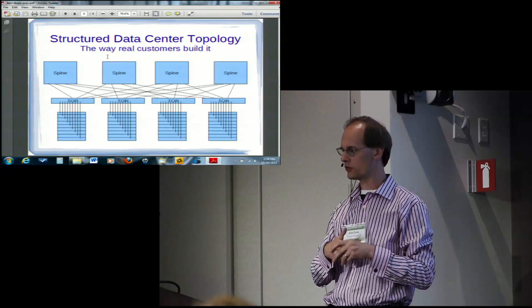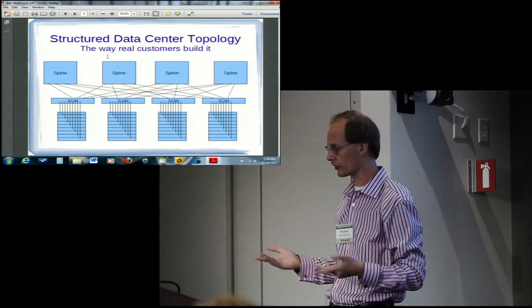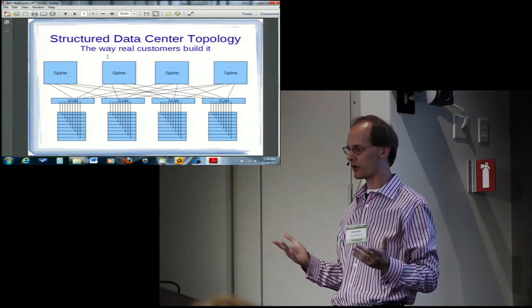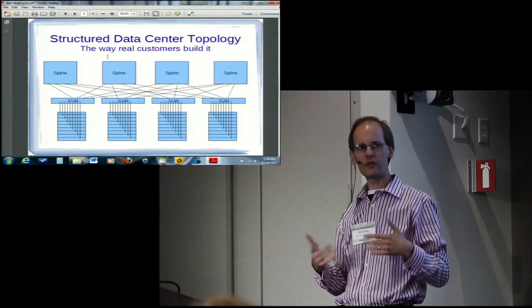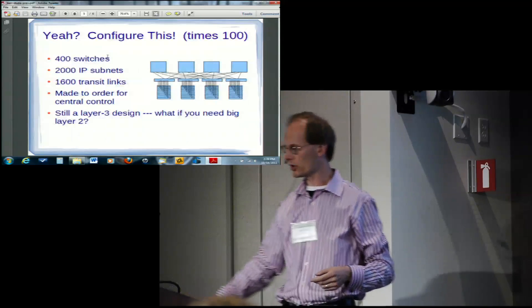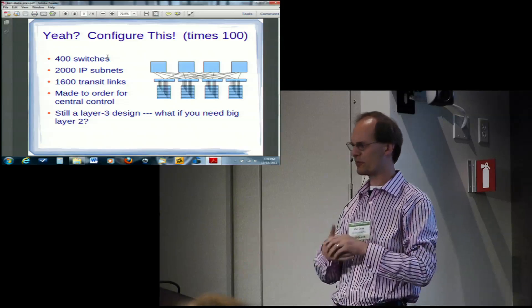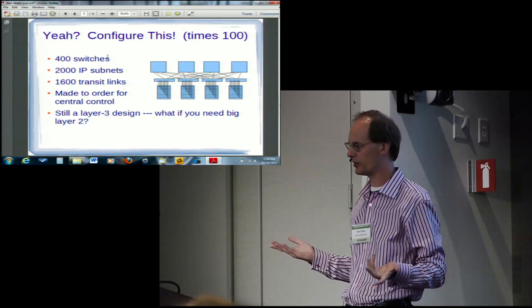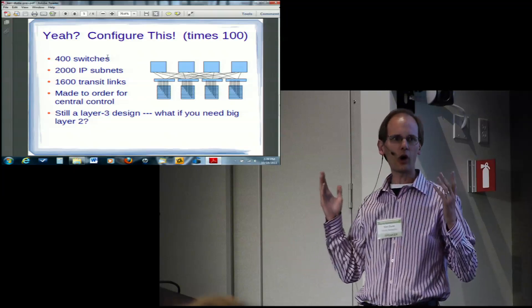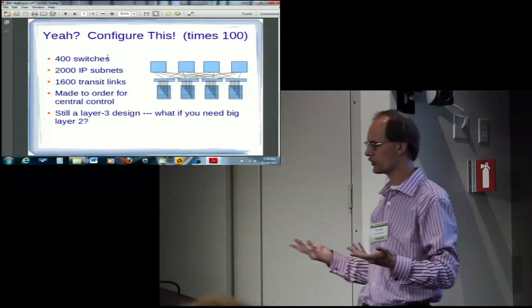And this topology can sustain enormous amounts of east-west bandwidth and also be very resilient to link failure. So it's a very good topology, it's just that it's extremely regular and kind of repetitive. And it would be nice if the network knew this was the topology and could save you from the chore of trying to configure it, because in a network with 400 switches, probably 2,000 IP subnets, depending on how you do it, most of which are really tiny, 1,600 transit links, this architecture is just made to order for some kind of central control, automated provisioning, automated administration.